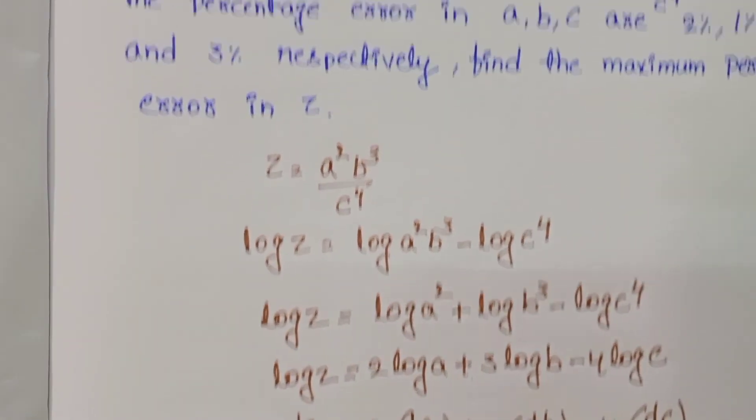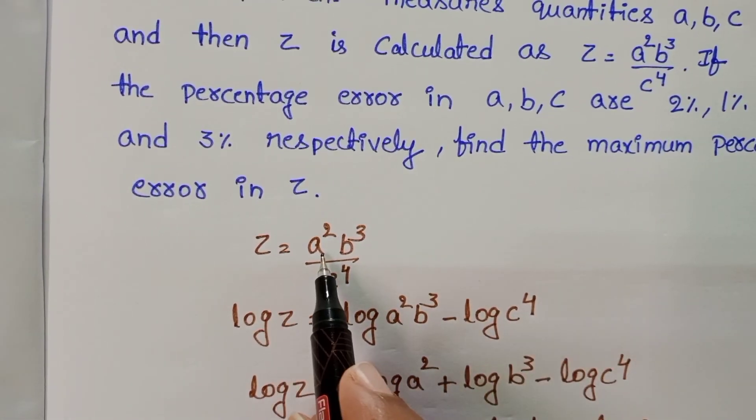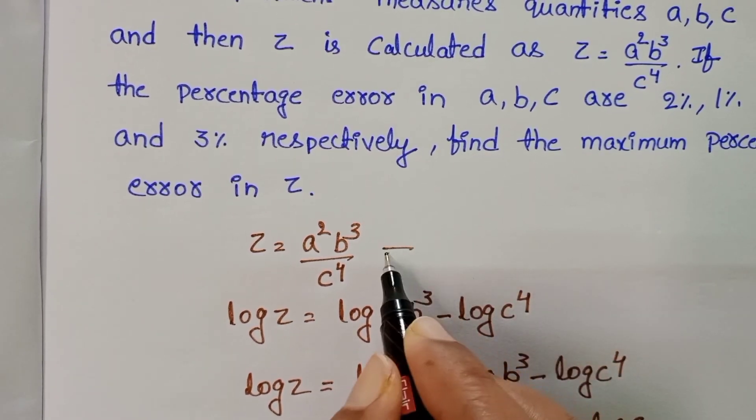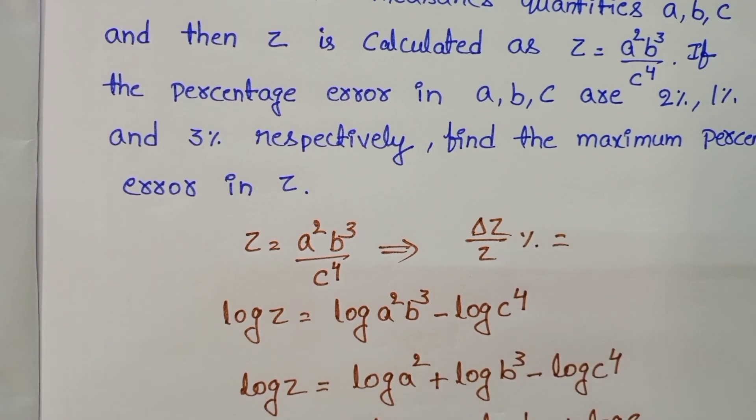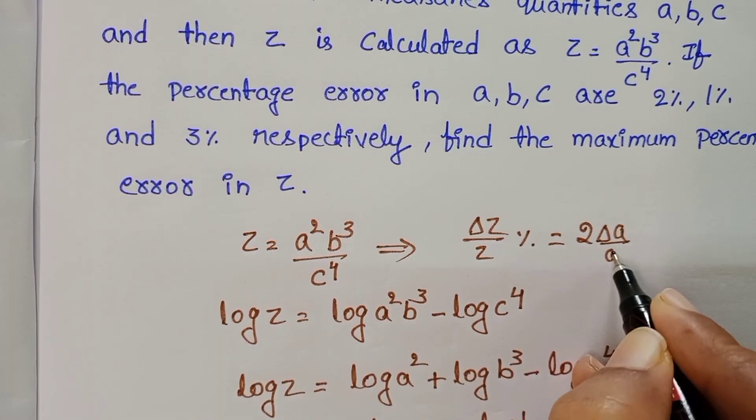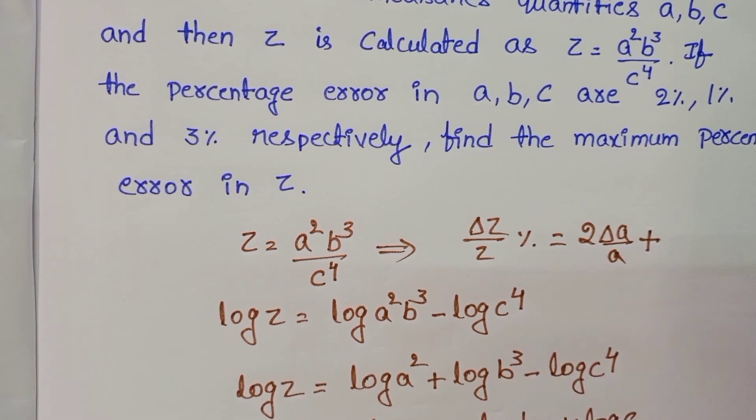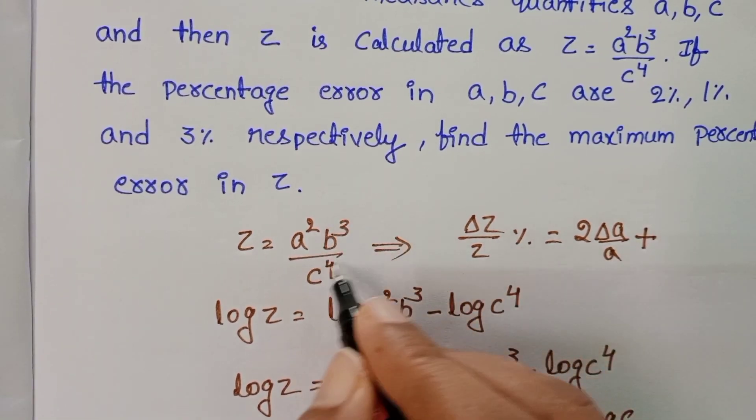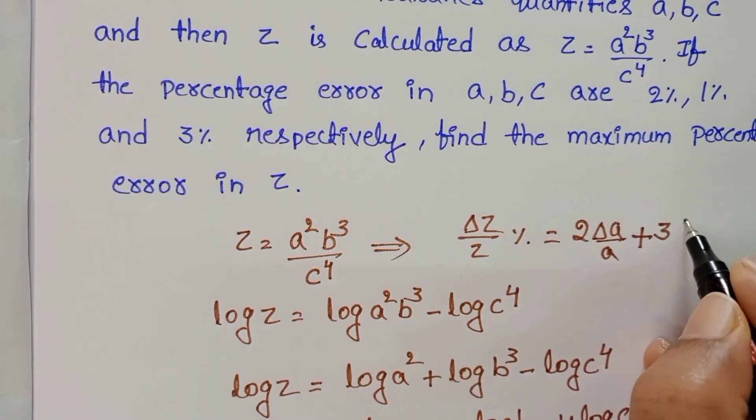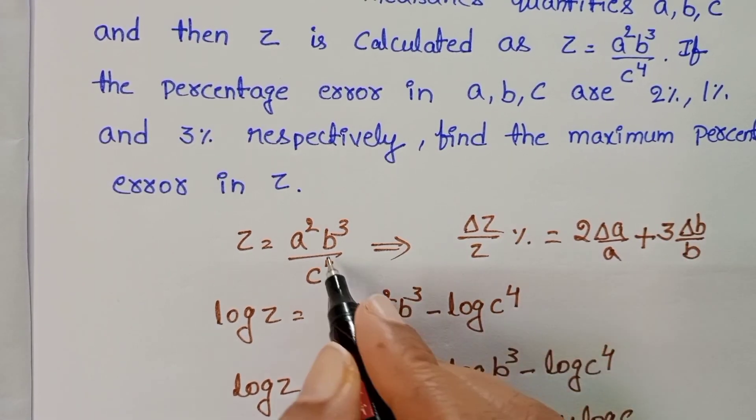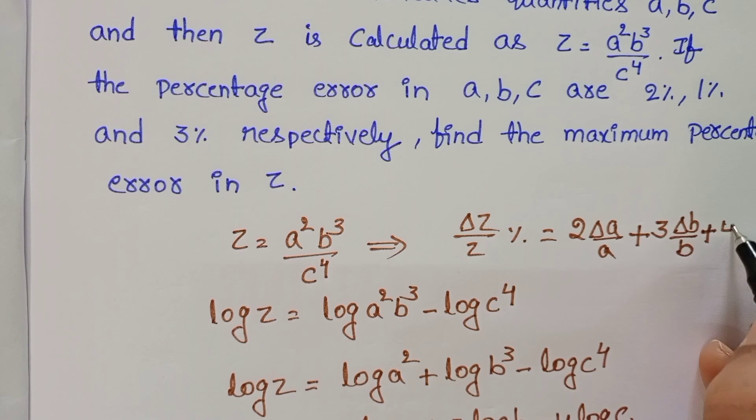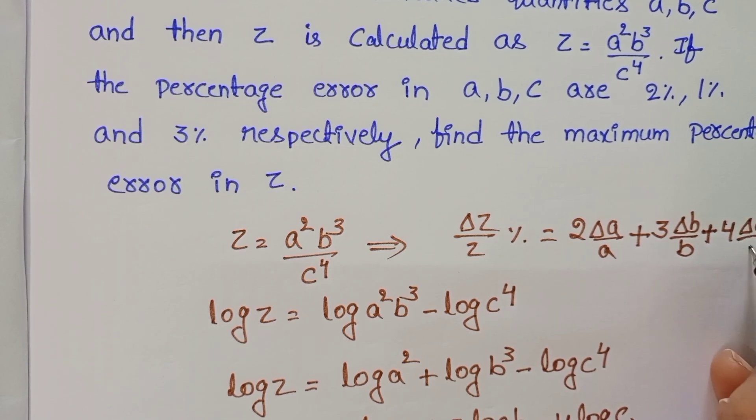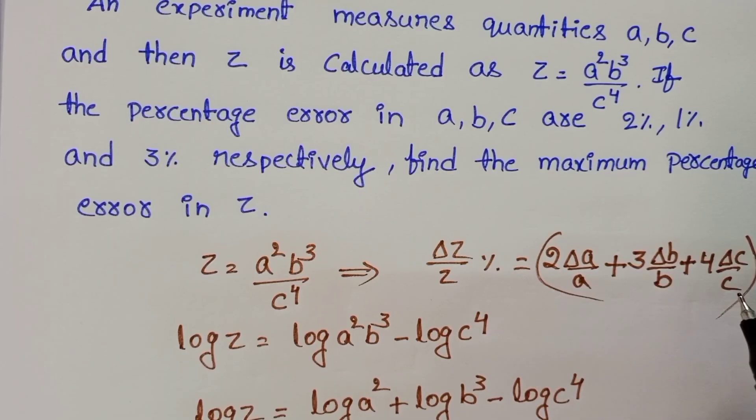In a single step, check this question. Z equals A square B cube by C power 4. The percentage error of Z equals 2 times delta A by A, take plus sign only, plus for B cube, 3 times delta B by B. And denominator C power 4 is there but you should take plus sign only, plus 4 times delta C by C percent. In this way, take the formula to calculate the maximum percentage error.